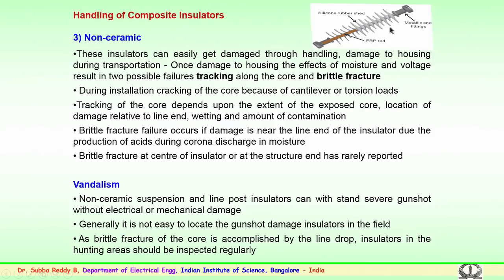Composite insulators — with silicon rubber on the outer shed and a fiberglass rod between the metal end fittings — can easily get damaged through handling. Crates made for transport must be carefully considered so that silicon rubber sheds do not overlap and mechanical forces are not exerted on them. If damage occurs to the housing, the effects of moisture and voltage stress could result in two possible failures: tracking along the core, or brittle fracture — both very serious for non-ceramic insulators.